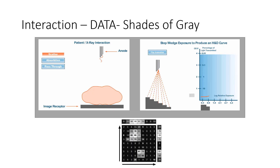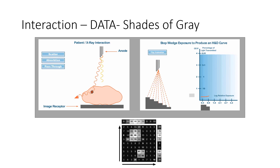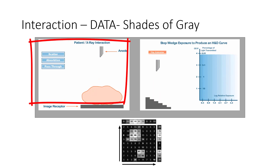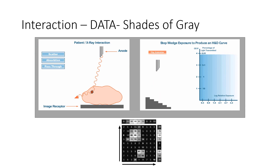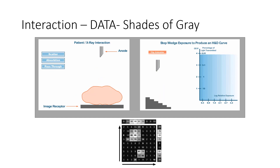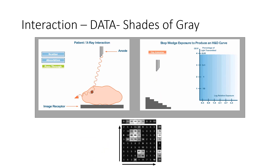Let's take a moment to study this slide. We're looking at the interaction of ionizing radiation with tissue to create shades of gray. Those shades of gray correspond to a matrix. At the bottom, we can see a matrix with different shades of gray, and the strength of the intensity for each of those shades of gray has a specific number — it is digitized.